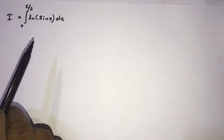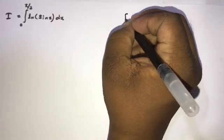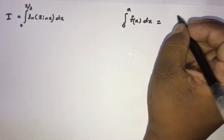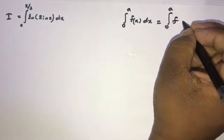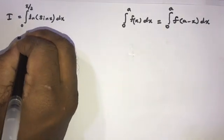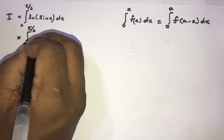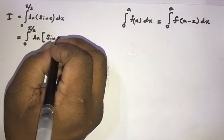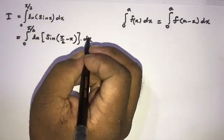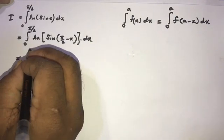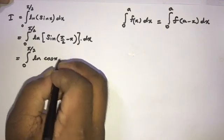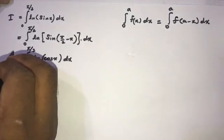How to start? You know this property of definite integrals: the integral from 0 to a of f(x) dx is equal to the integral from 0 to a of f(a - x) dx. Now we can apply this. So we can write this as the integral from 0 to π/2 of natural log of sin(π/2 - x) dx. Now we know sin(π/2 - x) is equal to cosine of x. So this is also equal to I.